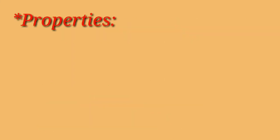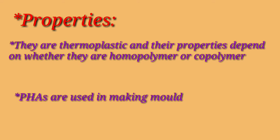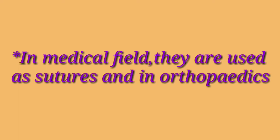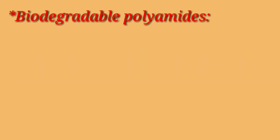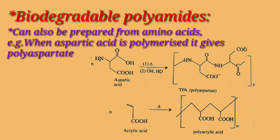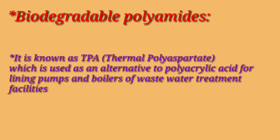Properties of PHAs: they are thermoplastic and their properties depend on whether they are homopolymers or copolymers. PHAs are used in making molded goods, paper coatings, non-woven fabrics, films, and adhesives. In the medical field, they are used in sutures and orthopedics. Next is biodegradable polyamides, which can also be prepared from amino acids. For example, when aspartic acid is polymerized, it gives polyaspartate, known as TPA — thermal polyaspartate — which is used as an alternative to polyacrylic acid for lining pumps and boilers of wastewater treatment facilities.